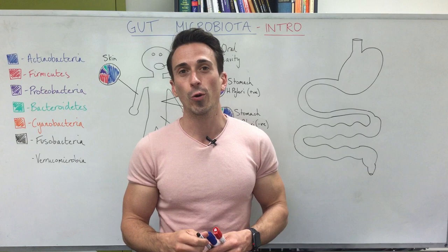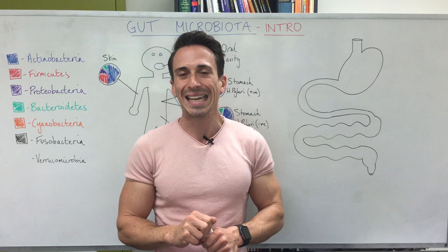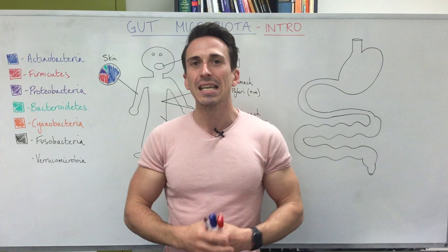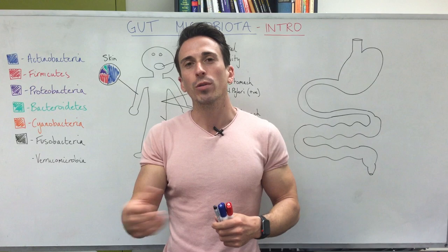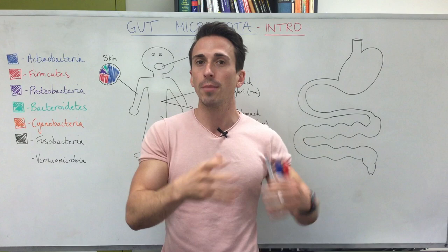Let's get started and look at what the gut microbiome actually is. There are two different words: microbiota and microbiome. The microbiota refers to the actual microorganisms that live on and within us. The microbiome has to do with the genetic products that these living organisms produce — so microbiota are the living organisms themselves, and the microbiome is the genetic output of these microorganisms.